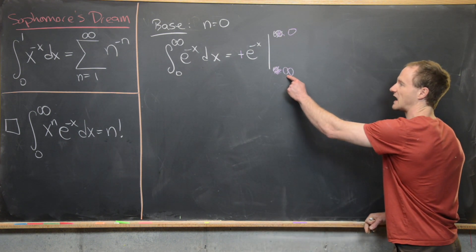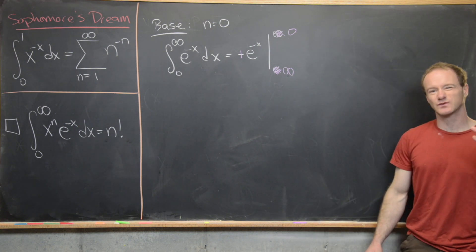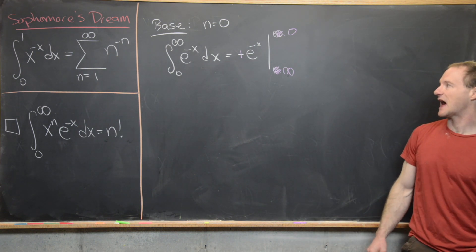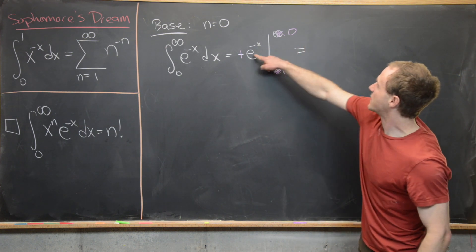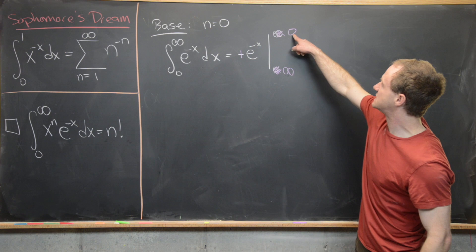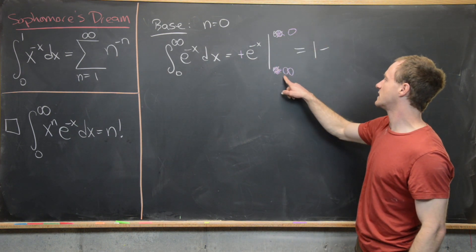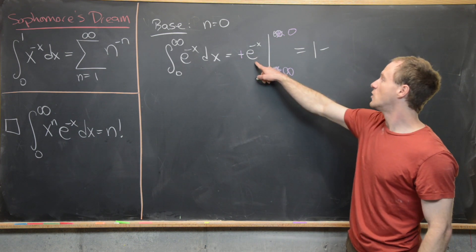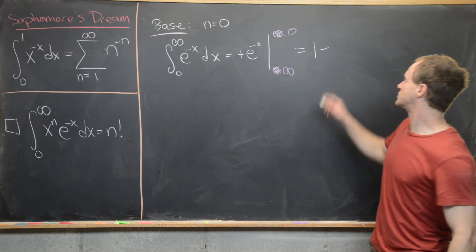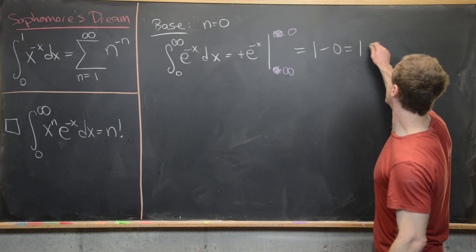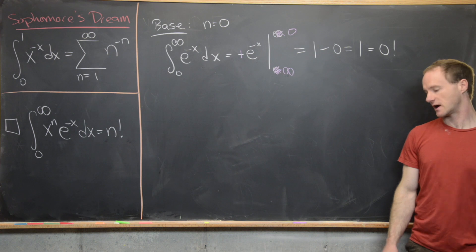Keeping in mind that evaluating at infinity really means taking a limit as x tends toward infinity: e to the minus infinity is 0. So we have 1 minus 0, which is 1. And 1 is the same as 0 factorial, so the base case holds.